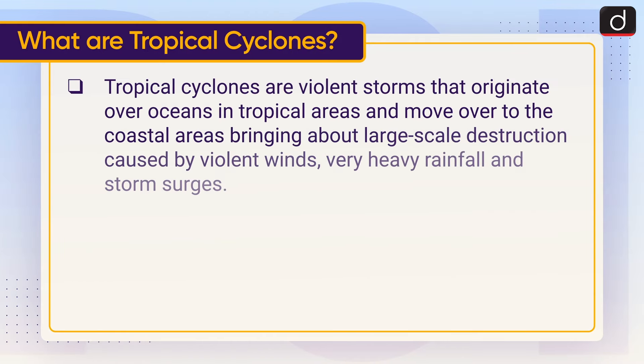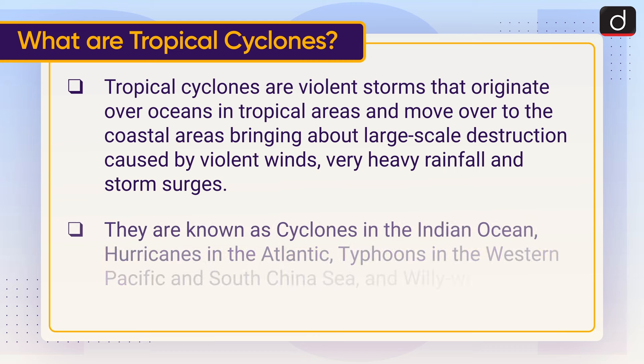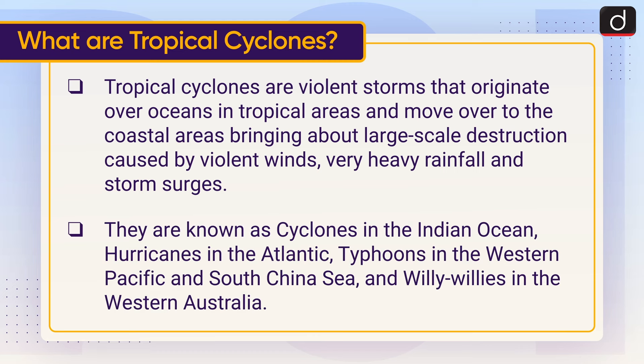Tropical cyclones are violent storms that originate over oceans in tropical areas and move over to coastal areas, bringing large-scale destruction caused by violent winds, very heavy rainfall, and storm surges. They are known as cyclones in the Indian Ocean, hurricanes in the Atlantic Ocean, typhoons in the Western Pacific and South China Sea, and willy-willies in Western Australia.